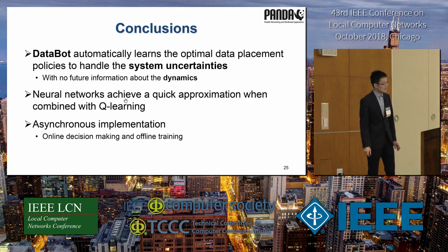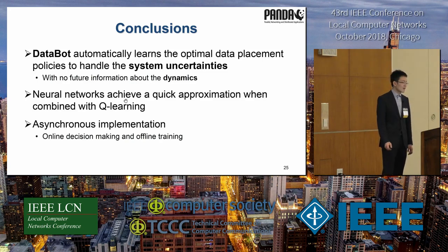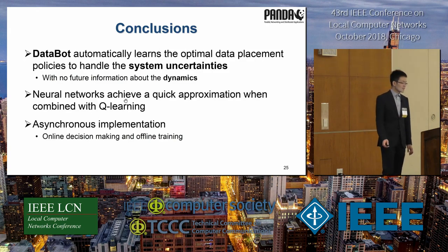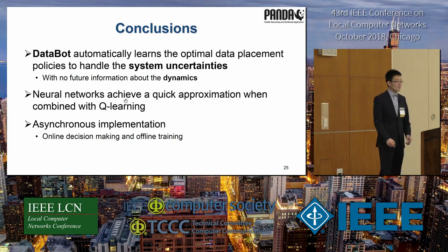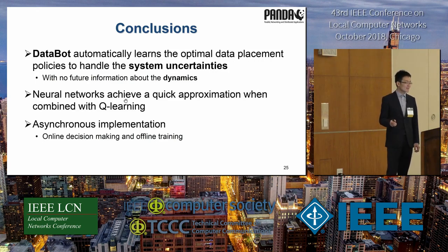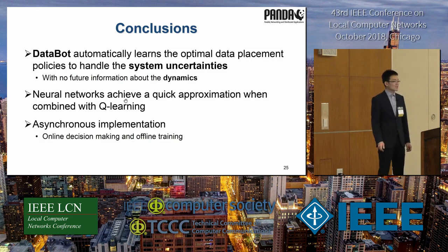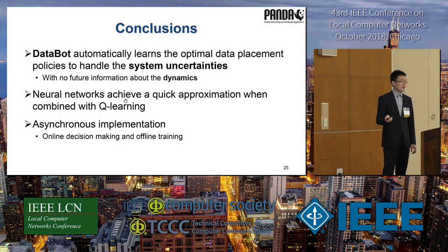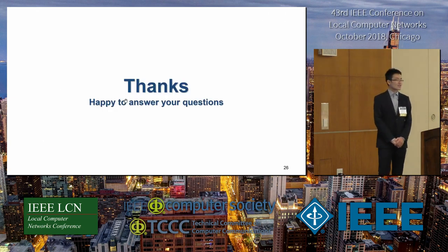We propose a Q-learning-based framework, DataBot, to automatically learn optimal data placement policies to handle a dynamic system with many uncertainties. The neural network estimates near-future latencies by training the weight vector combined with Q-values, avoiding huge complexity of the learning system and speeding up convergence. Two asynchronous components — online decision-making and offline training — are integrated seamlessly to ensure no extra overhead is introduced to handle data flows. Performance evaluation demonstrates the efficiency of this hybrid design. Thanks for your attention and giving me the chance to present here. I'm happy to hear your comments and answer your questions.